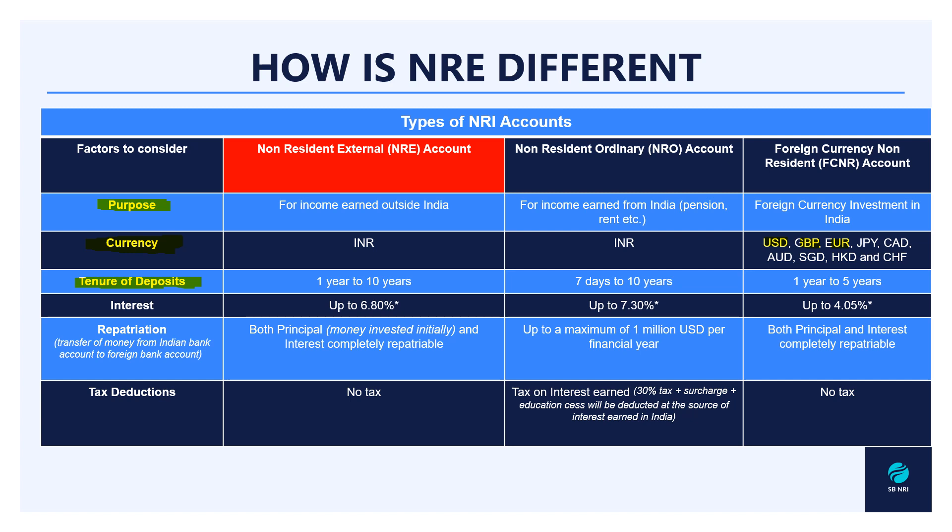The tenures basically differ with each type of account, and so does the interest earned. For NRE you can earn up to 6.80% interest rate - though again this is entirely dependent on the bank you have chosen for the deposits, so it will vary. We are providing a tentative average rate. The basic differences between accounts also lie in interest rates: you can get up to 7.30% for an NRO account and up to 4.05% for an FCNR account.